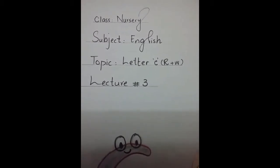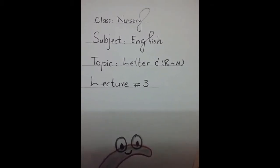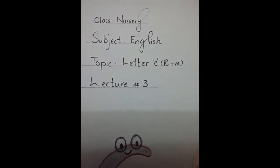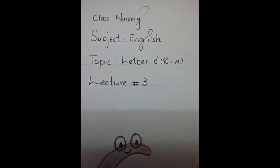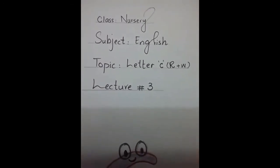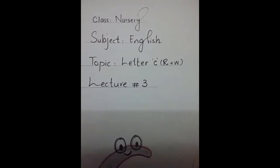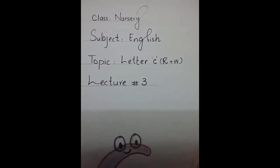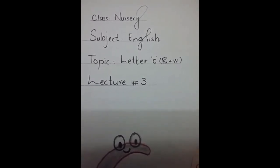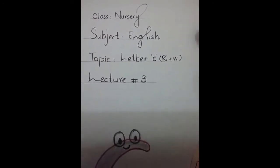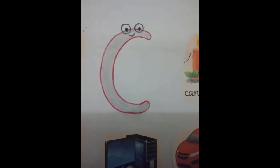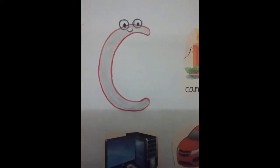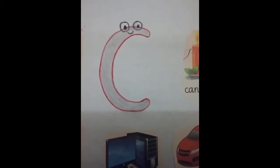Now we have done two letters in previous lectures — letter A and B — with their sounds and their formations as well. Now today we will do the next letter. Students, can you tell me what comes after letter B? Which is the third letter in the alphabet? Yes. Letter C. It comes after letter B.